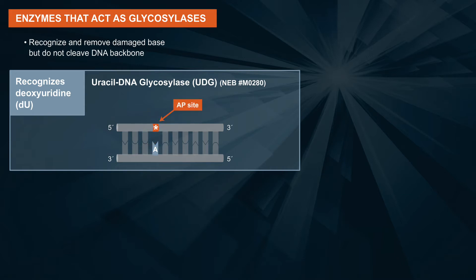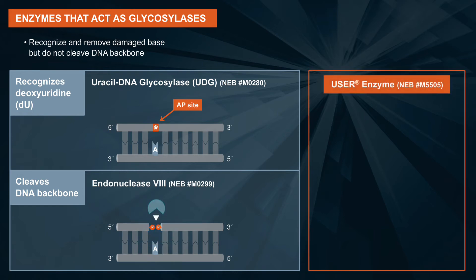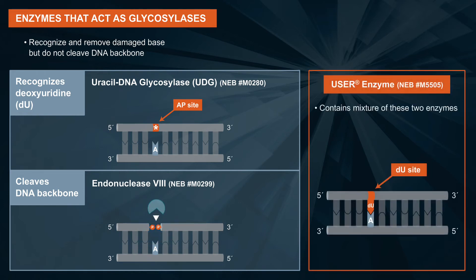An example of this type of enzyme is UDG, which recognizes deoxyuridine (dU), removes it, and leaves an AP site. To cleave the DNA backbone, another enzyme such as Endonuclease VIII is required. The USER enzyme contains a mixture of these two enzymes so that the damage is completely removed and the AP site is cleaved.